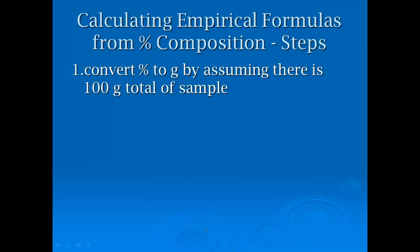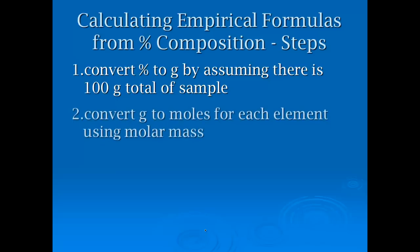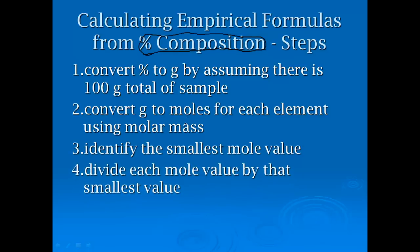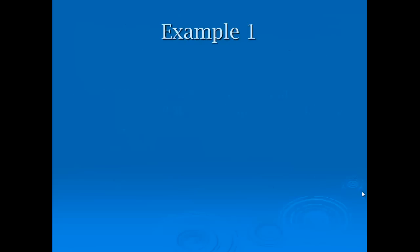Let's do some steps. First, if you're finding the empirical formula, convert the percentage to grams by assuming there's 100 grams of total sample. This is if you're given percent composition. Then convert grams to moles for each element, identify the smallest moles value, and divide each mole value by that smallest value. Formulas give us mole ratios. If I have water H2O, there's two moles of hydrogen for every one mole of oxygen, two atoms of hydrogen for every one atom of oxygen.